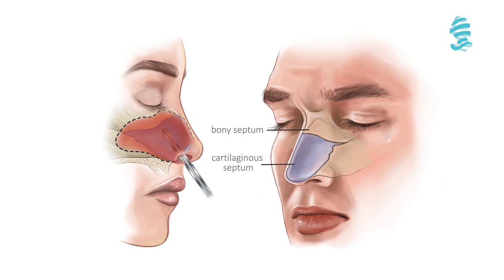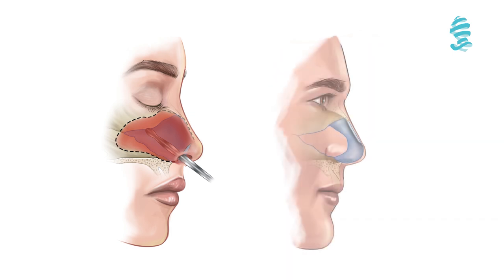The septal mucosa is incised at the nasal entrance and separated from the cartilaginous and bony septum. Then the deviated cartilage and bone may be resected to relieve nasal blockage.